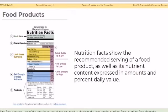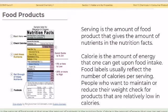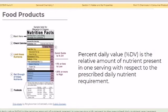Nutrition facts show the recommended serving of a food product as well as its nutrient content expressed in amount and percent daily value. Serving is the amount of food product that gives the stated nutrients. Calorie is the amount of energy one can get from food intake. Food labels usually reflect the number of calories per serving, and people who want to maintain or reduce weight check for products that are relatively low in calories.